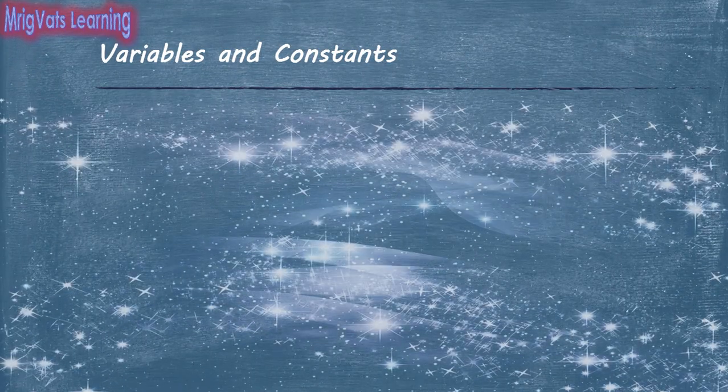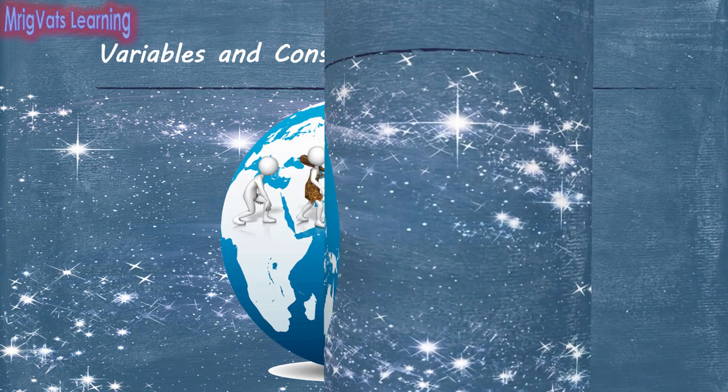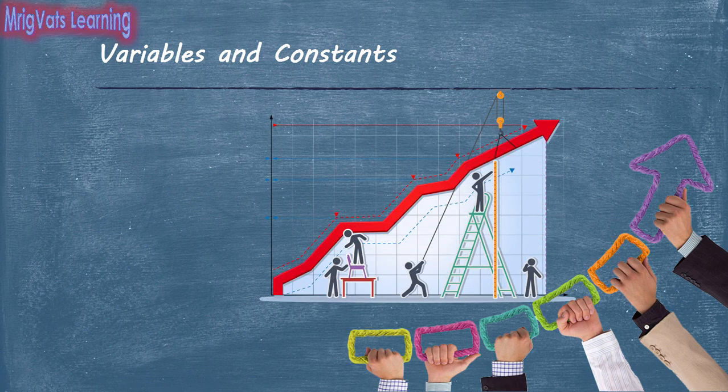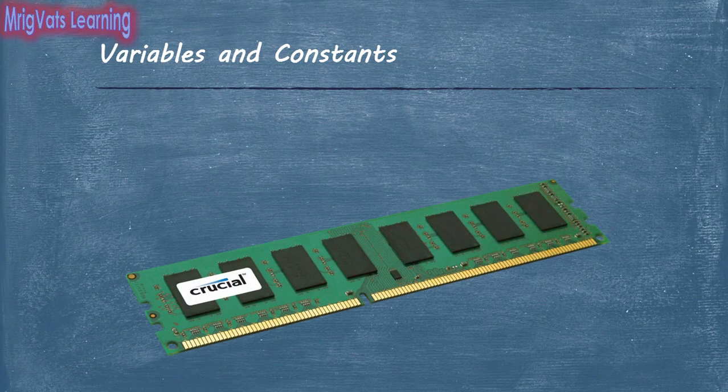One of the eternal truths is that change is the only constant in this universe. So is true with any business organization or an application program that you develop for the organization. As a result, when your program needs to interact with the user, it has to store data that it accepts from a user somewhere in the program.